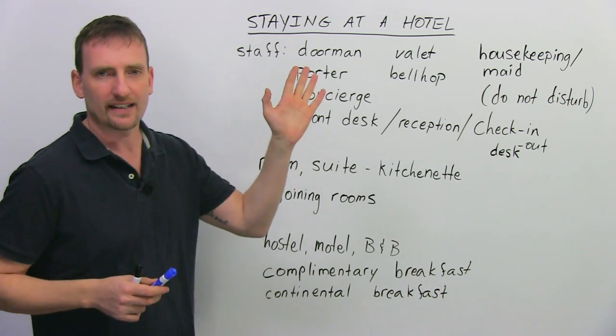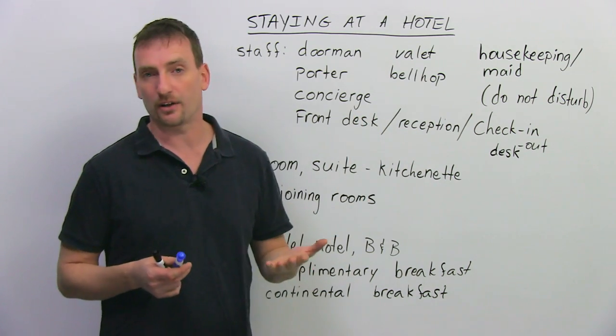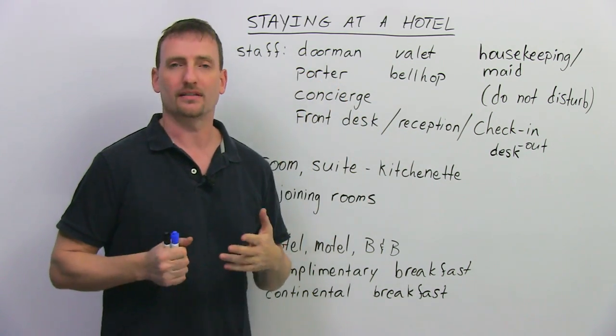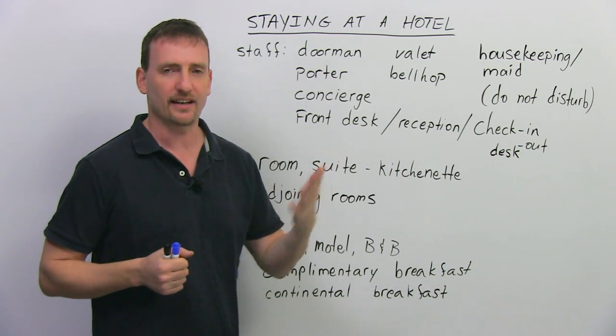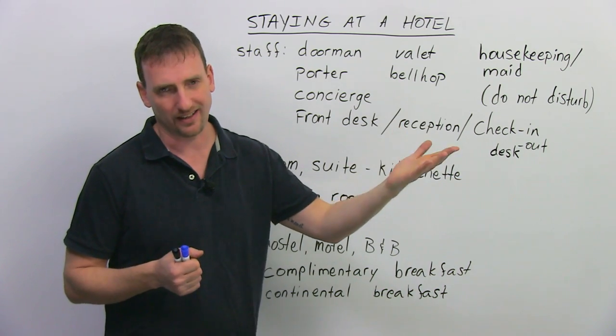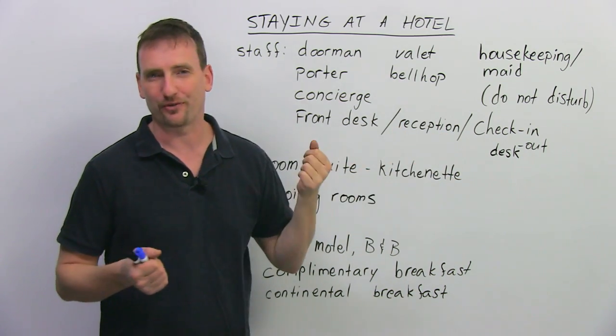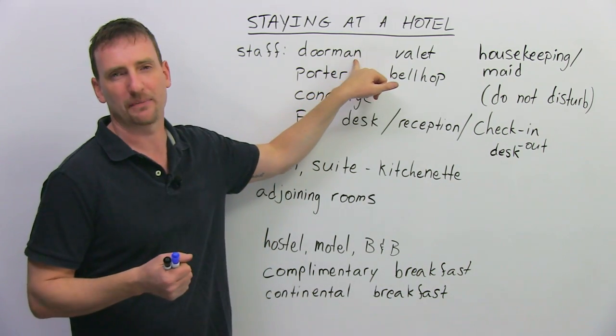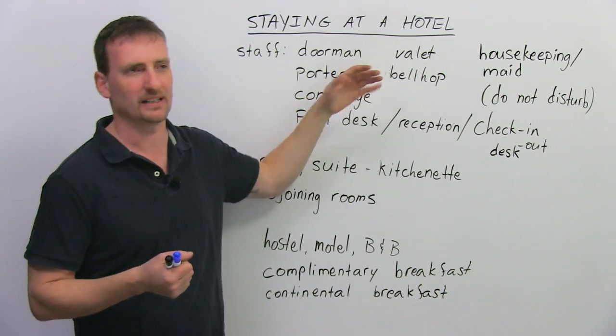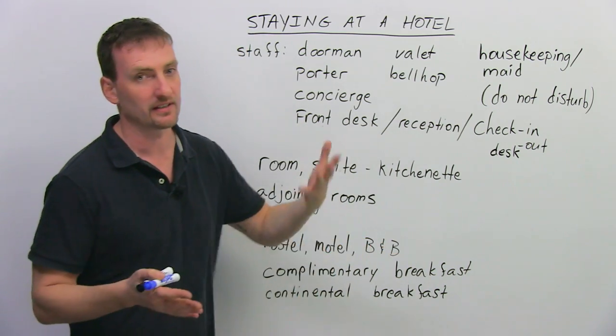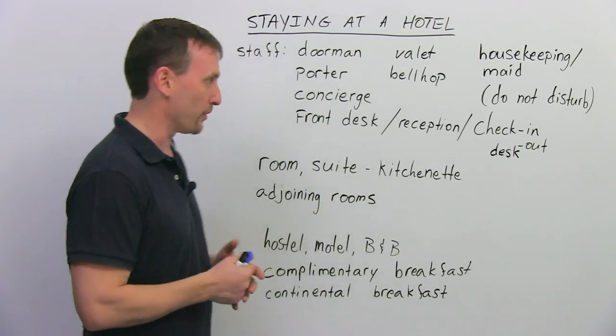You need to know some vocabulary, some of the staff you're going to be dealing with, some of the services and amenities. It's a lot of vocabulary, but things you probably need to know before you get to the hotel. The first thing we're going to look at is the staff. Who works at a hotel? First of all, in some of the more fancy hotels, the more high-scale hotels, you're going to have a doorman. He or she, mostly he, will open and close the door for you. That's why doorman.